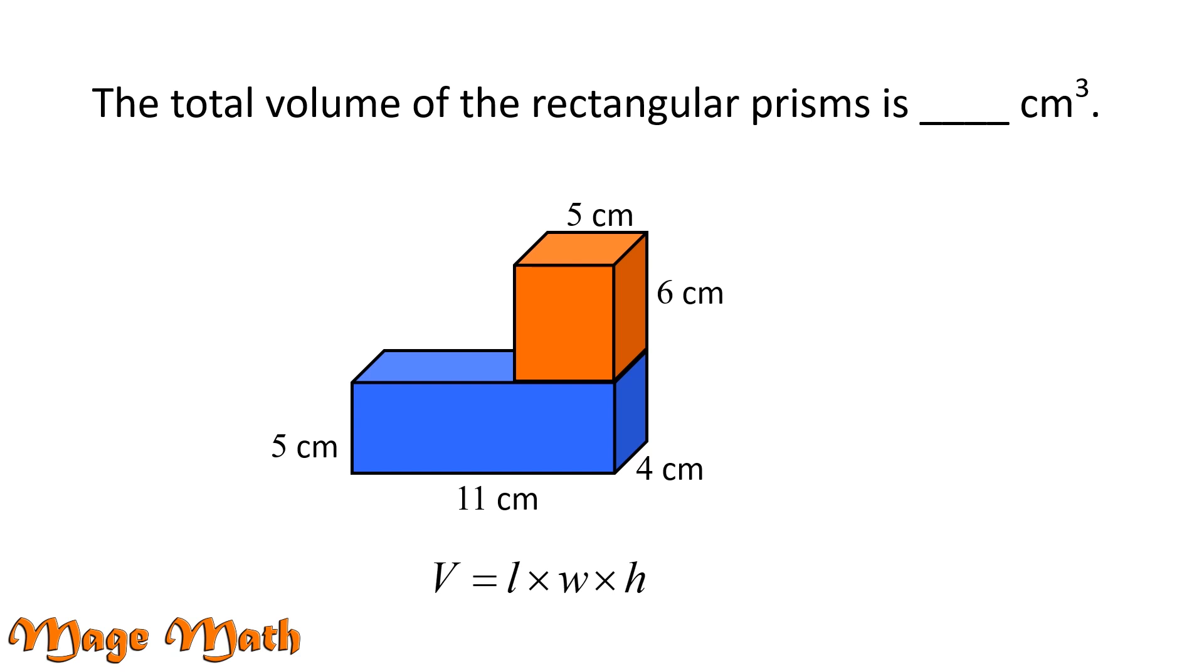Let's substitute 5, 4, and 11 into our formula. 5 times 4 times 11 equals 220 centimeters cubed.